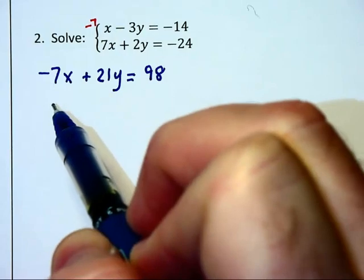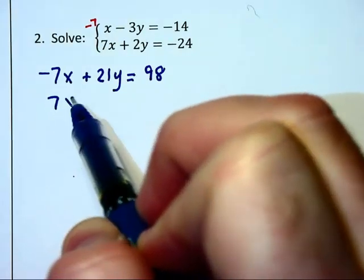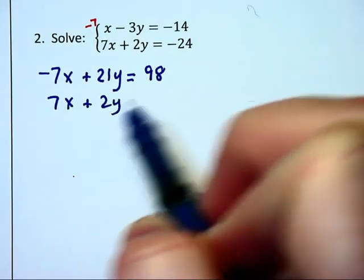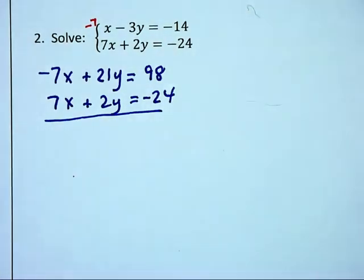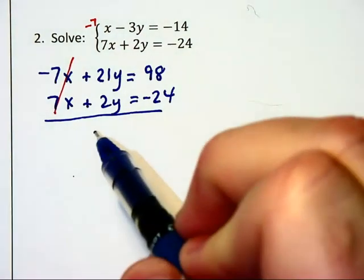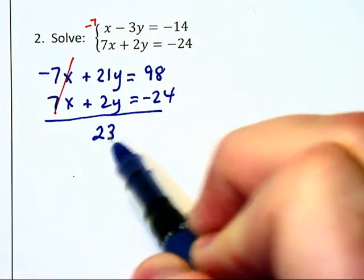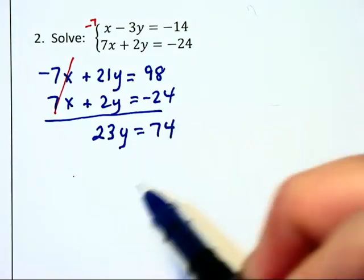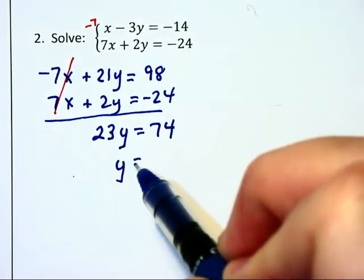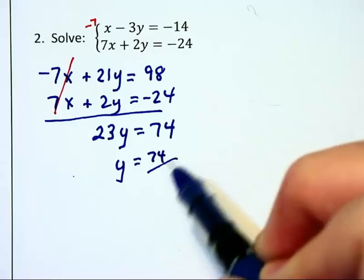And I'm going to bring the second equation down here and just rewrite it below all over again so that I can then add the equations together specifically to be able to cancel out those x's. And that will leave us with 23y is equal to 74 and y then is equal to 74 over 23.